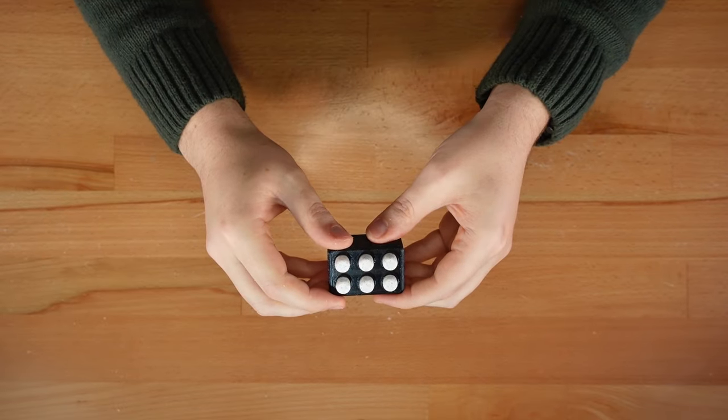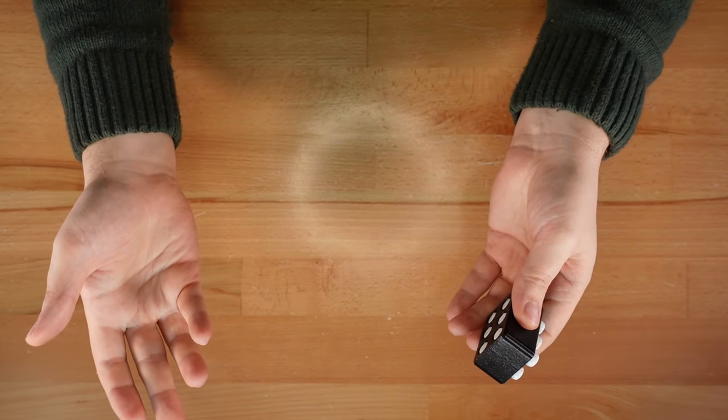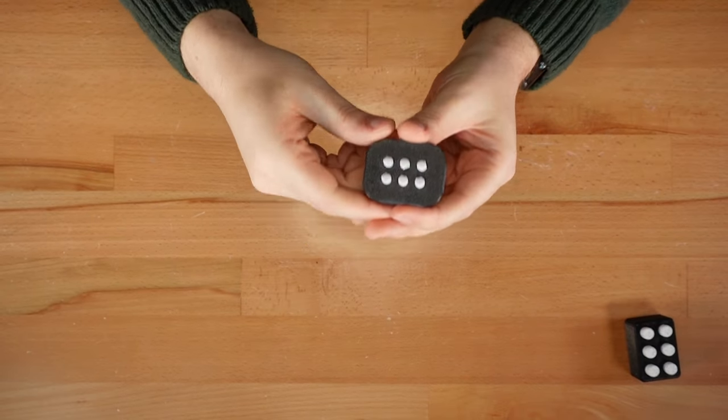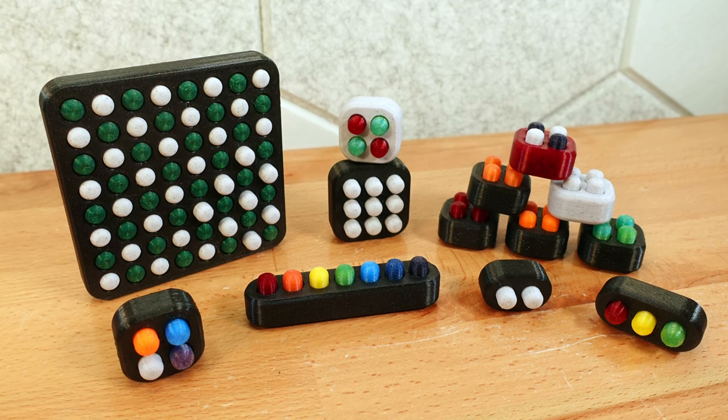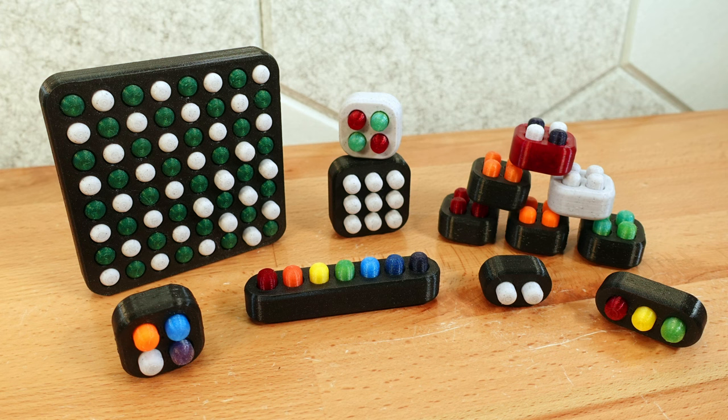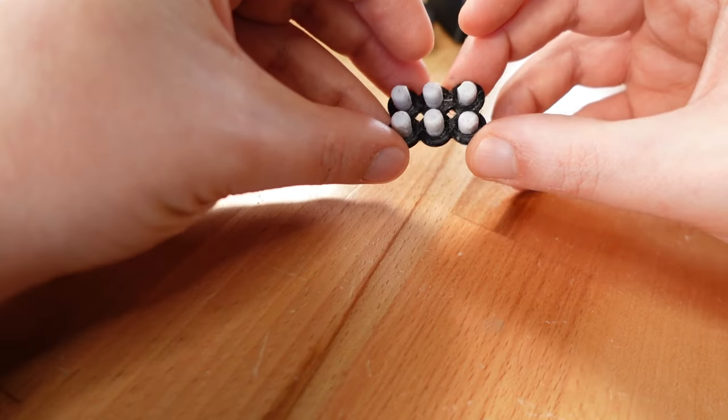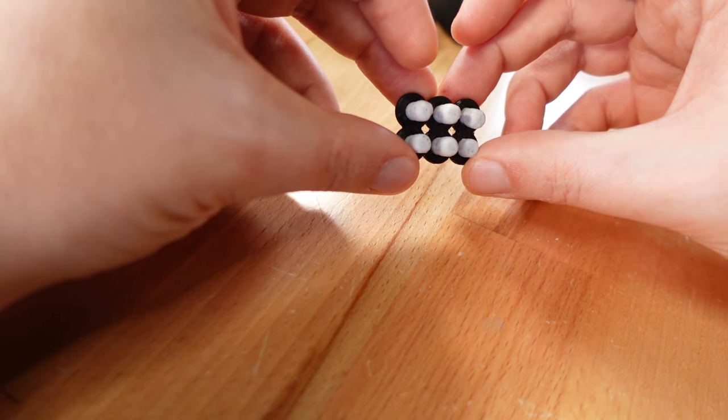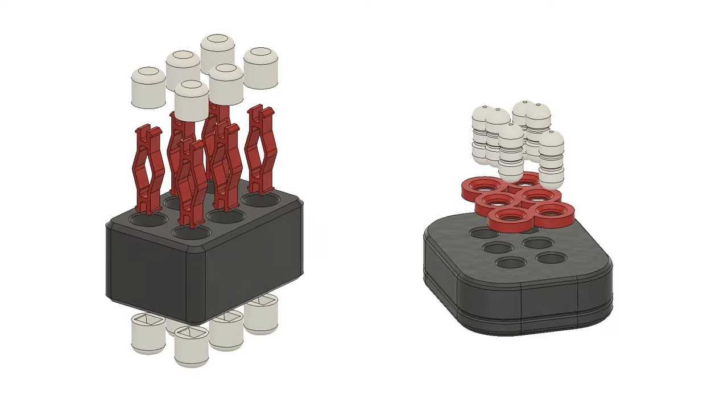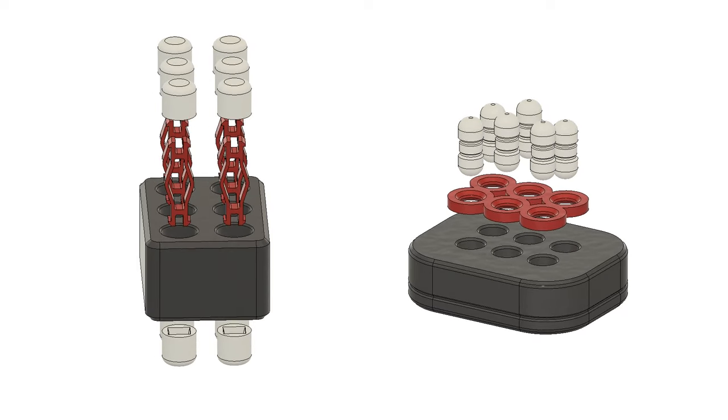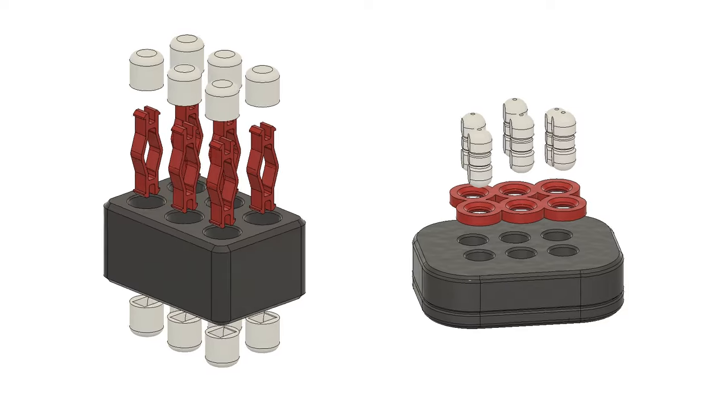So with those challenges in mind, let's make something better. This is the new 3D printed braille cell. The design is inspired by my recent pop fidgets. Instead of 6 individual springs, it uses a single TPU gasket, which flexes to allow the buttons to pop back and forth. This also reduces the number of parts from 19 down to 8.